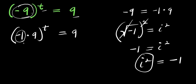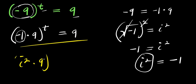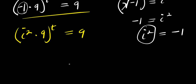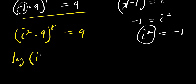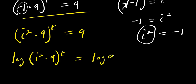So the equation becomes i squared times 9 raised to the power of t, and this equals 9. From here I can apply logarithm: log of i squared times 9 raised to the power of t equals log of 9.